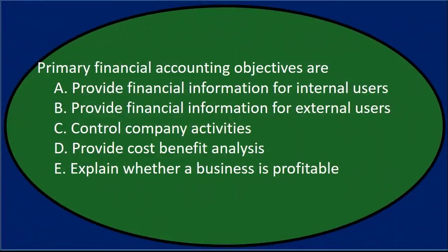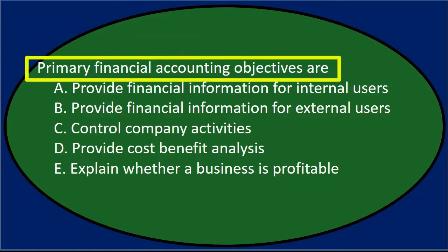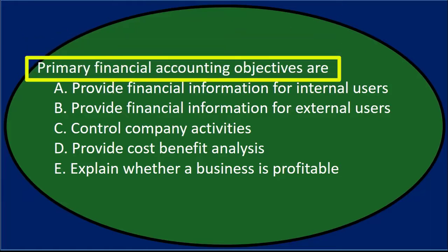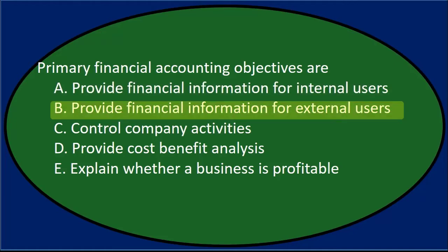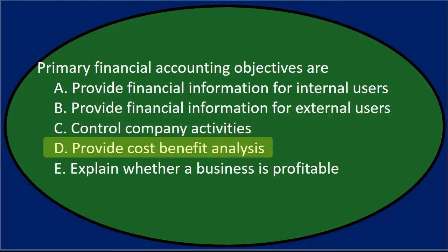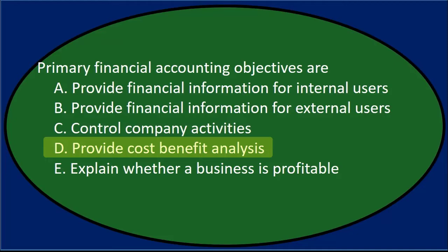Starting with the first question: primary financial accounting objectives are — A: Provide financial information for internal users. B: Provide financial information for external users. C: Control company activities. D: Provide cost-benefit analysis. E: Explain whether a business is profitable.